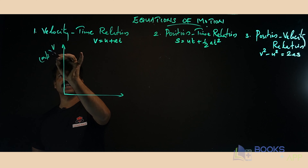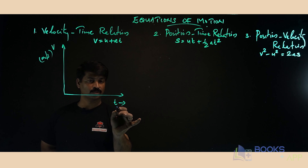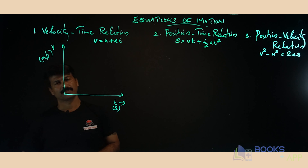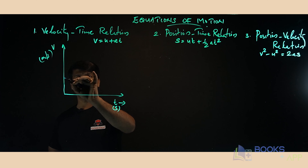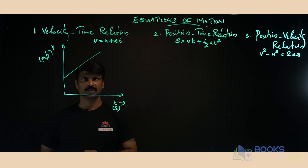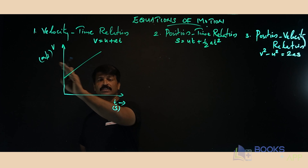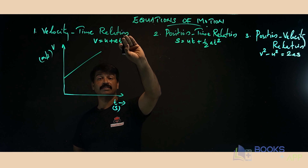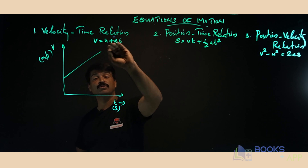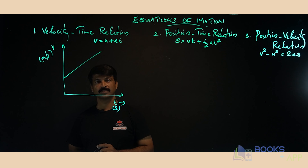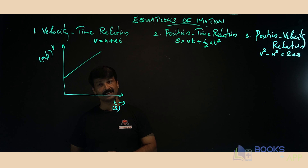In a velocity-time graph, velocity is represented along the y-axis with units of meters per second, and time is represented along the x-axis with units of seconds. A straight-line graph on a velocity-time graph indicates that the object is moving with uniform acceleration.